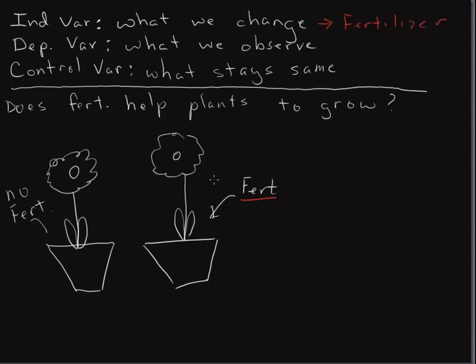So now, the dependent variable is what we observe. When we do the experiment, what is it about the plants that we're going to observe? Well, we're going to measure it, and we're going to measure its growth. So, plant growth. At the end of every week, maybe, we're going to measure each plant and decide which one is growing better, the one with fertilizer or the one without fertilizer.